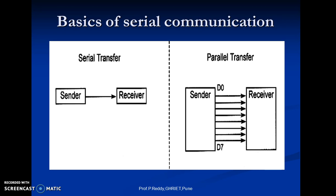There are two different types of communications: serial and parallel. Serial data communication uses two methods — asynchronous and synchronous. The synchronous method transfers a block of data at a time, while the asynchronous method transfers a single byte at a time. It is possible to write software to use either of these methods, but the programs can be tedious and long. For this reason, there are special IC chips made by many manufacturers for serial data communications. These chips are commonly referred to as UART — Universal Asynchronous Receiver-Transmitter — and USART, Universal Synchronous-Asynchronous Receiver and Transmitter.